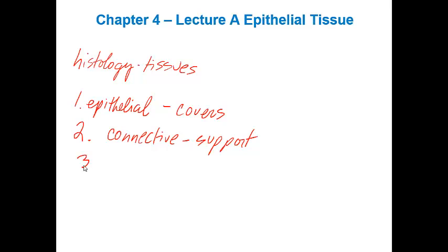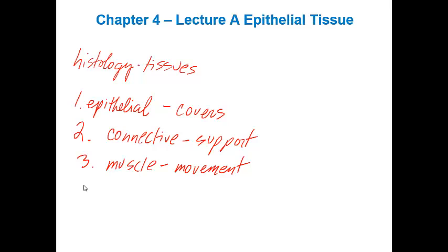The third type is going to be muscle, and there's only three types of muscle. This one is going to be thought of as movement and contractility. And then the fourth one is the controlling tissue, which would be nervous tissue.